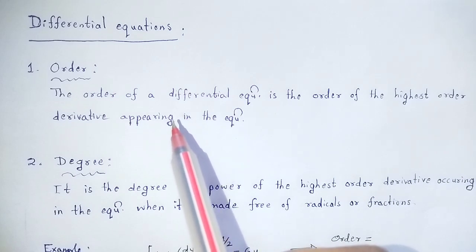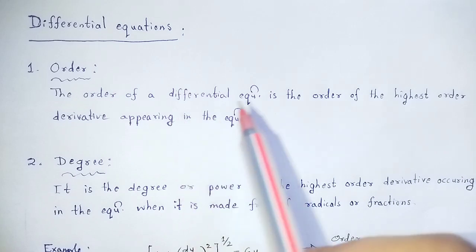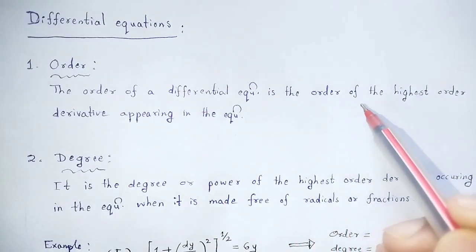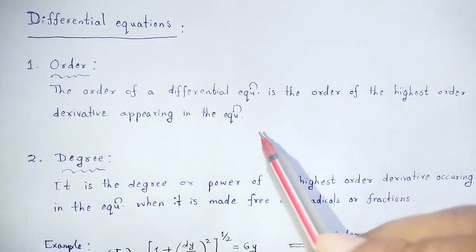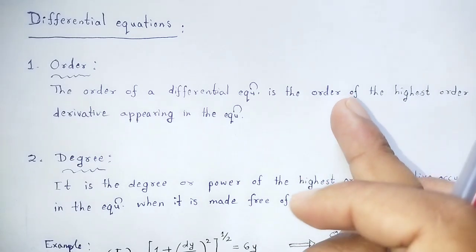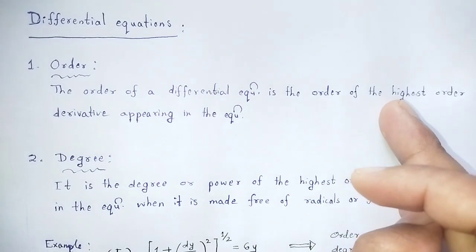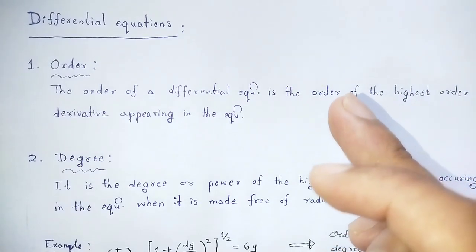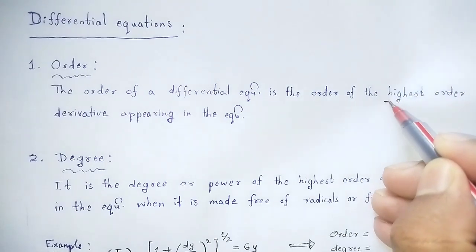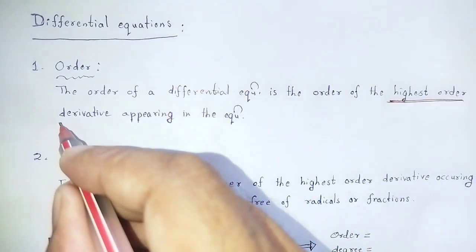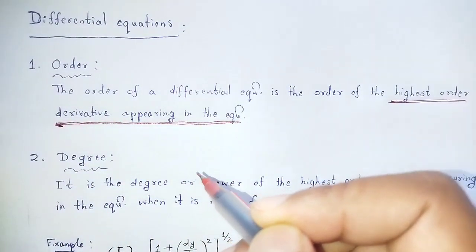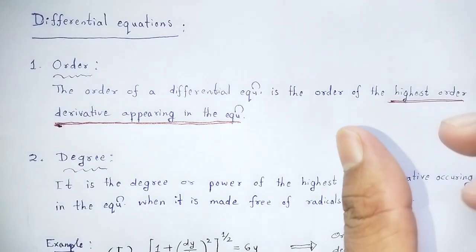The order of a differential equation is the order of the highest order derivative appearing in the equation. So when we want to find the order of a differential equation, we look for the highest order derivative present in that differential equation.